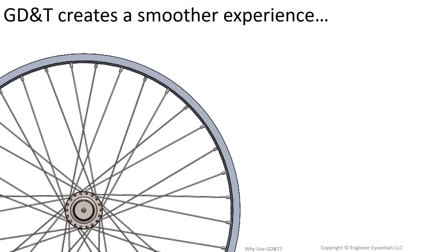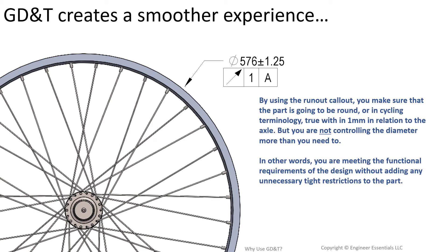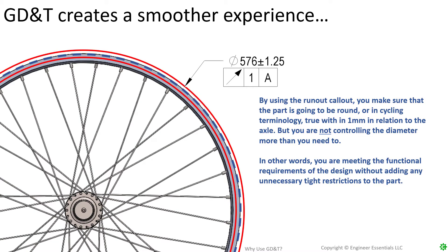Well, if you're using GD&T, you would just use a symbol like this — it's called runout. Here you see a 576 diameter with a plus or minus 1.25 millimeters, which is much bigger than the plus or minus 0.5 millimeters we had before. But now you can control that radial deviation with a runout of 1 millimeter. You are now meeting the functional requirements of the design without adding any unnecessary tight restrictions.